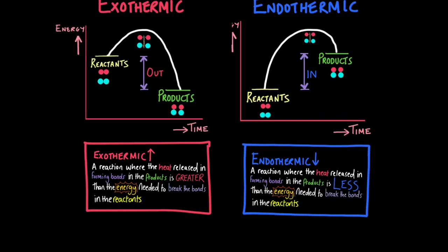If you have to compare it to endothermic reactions, you can write exactly the same sentence but replace greater with less. An endothermic reaction is one where the heat released in forming bonds in the products is less than the energy needed to break the bonds in the reactants. Although you need to remember a loaded sentence, it's really just one word difference between exothermic and endothermic. It's worth committing this sentence to memory because it could give you three marks.